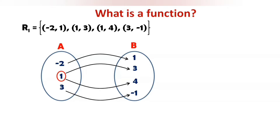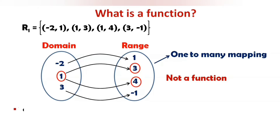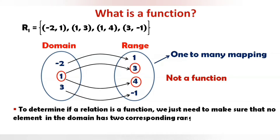Here we observe that the element 1 of set A has 2 images — 3 and 4 — in set B. This type of mapping is called one-to-many, in which an element of set A has more than one image in set B. This type of relation is not a function. Set A elements are called the domain and set B elements are called the range. To determine if a relation is a function, we just need to make sure that no element in the domain has 2 corresponding range values.